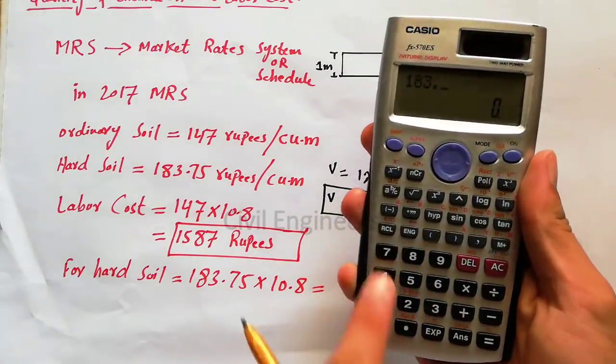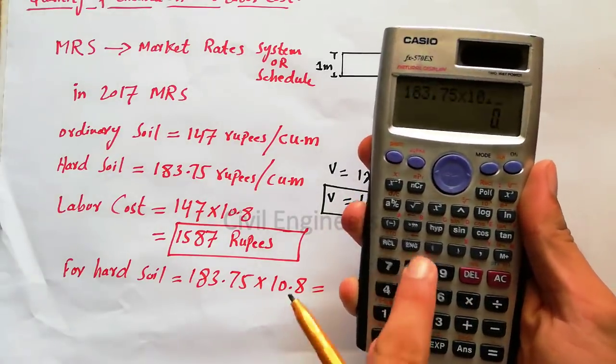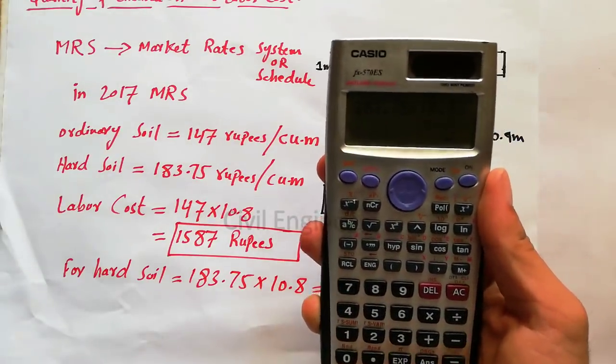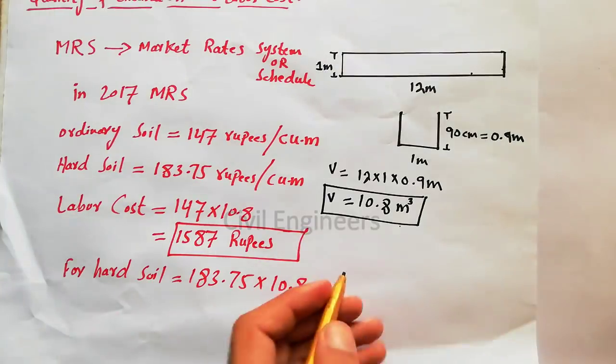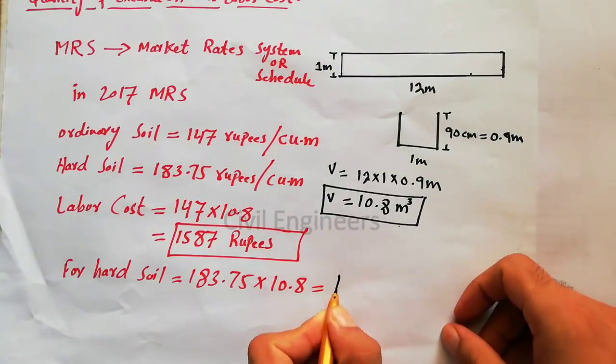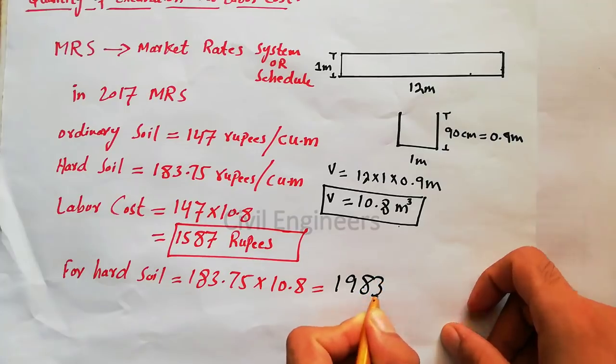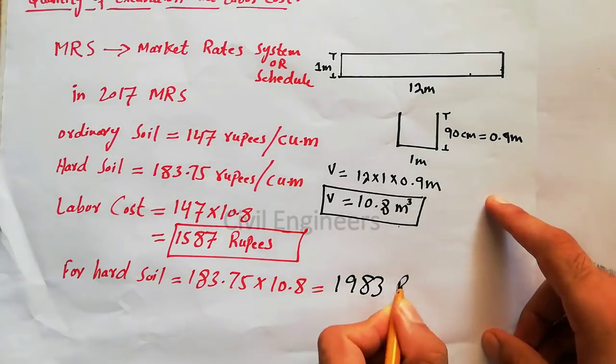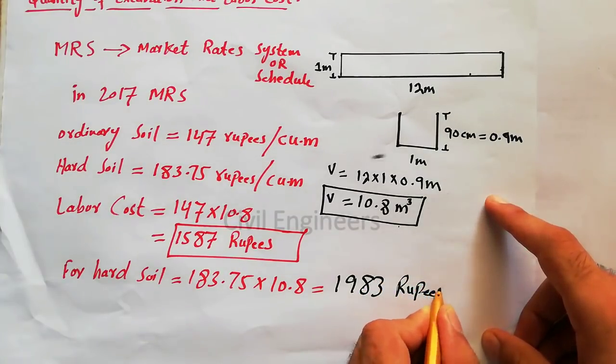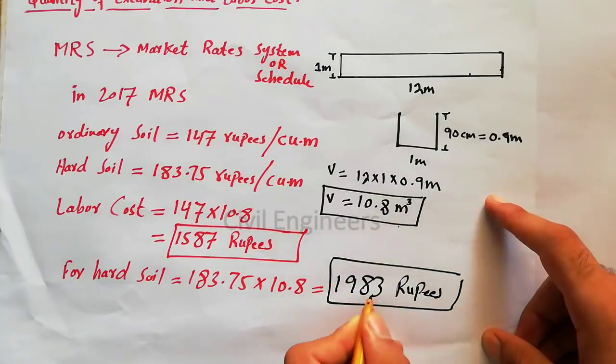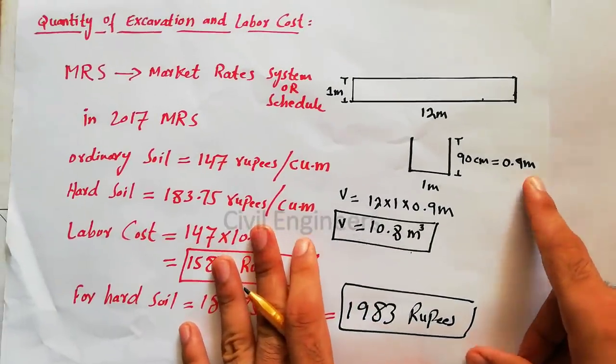183.75 multiply 10.8, right. So 1983... 1983.